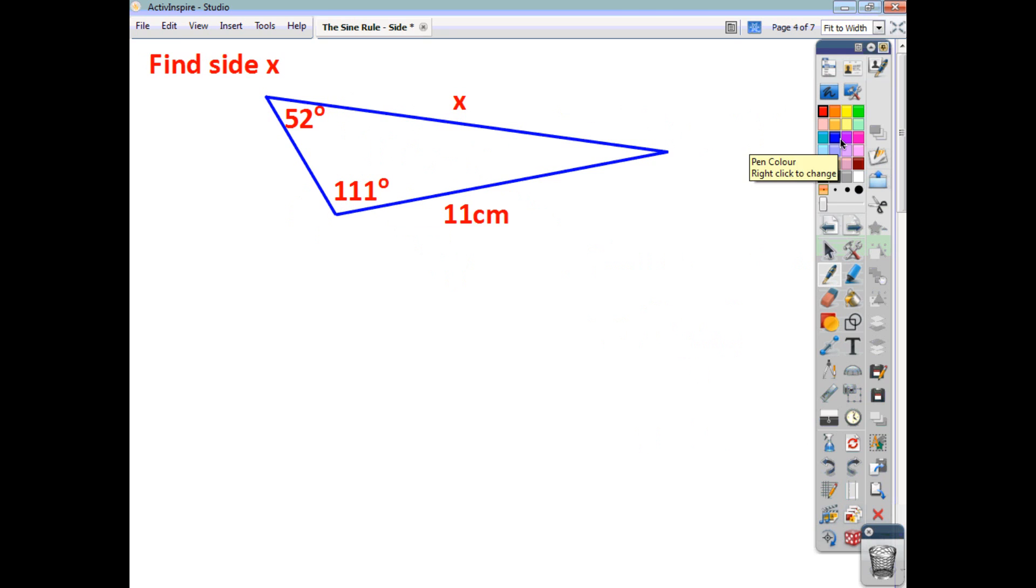Let's have a look at a second example. Here we have, again, a triangle, and the question involves two pairs of opposites. So we can start off by saying x over sine 111, that's going to be equal to 11 over sine 52.